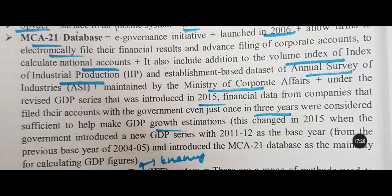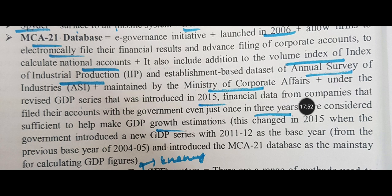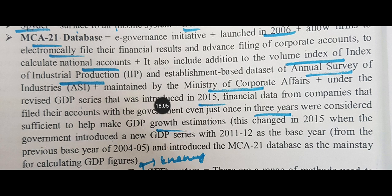The MCA21 database will also include an addition to the volume index of IIP and the establishment-based database of the Annual Survey of Industries. Under the revised GDP series introduced in 2015, financial data from companies that filed their accounts with the government even just once in three years were considered sufficient to help make GDP growth estimates.